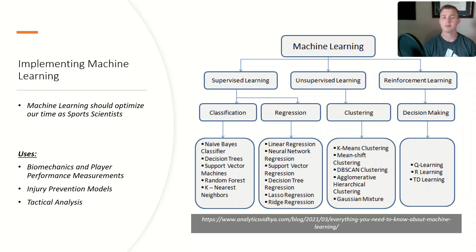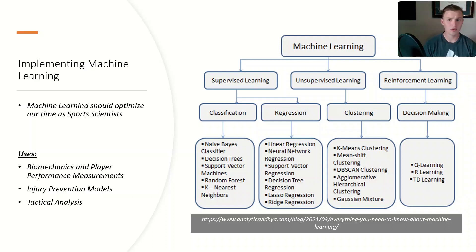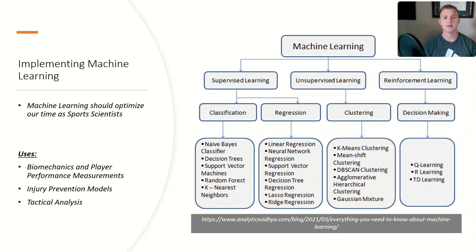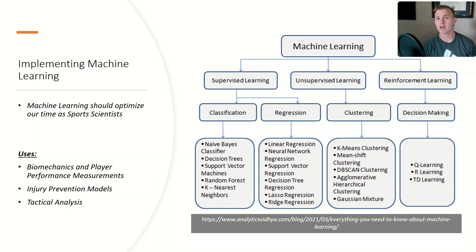How can we implement machine learning into our jobs as a sports scientist? It's important to remember that as a sports scientist, we're often on the floor with our athletes, and if we're going to utilize machine learning, it should streamline our jobs so that we're able to spend more time with our athletes and not less. Machine learning can be useful for things like talent identification, player recruitment, performance measurements, biomechanics, player injury modeling, and tactical analysis for training and games.